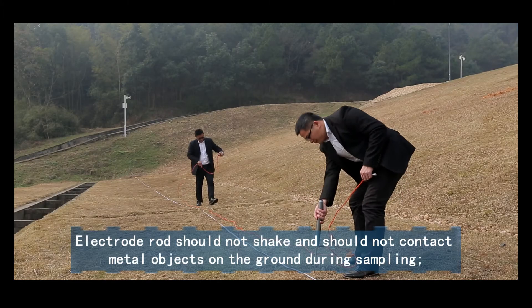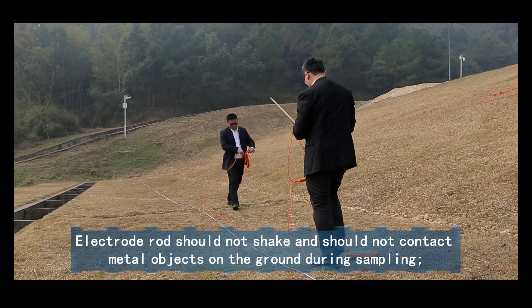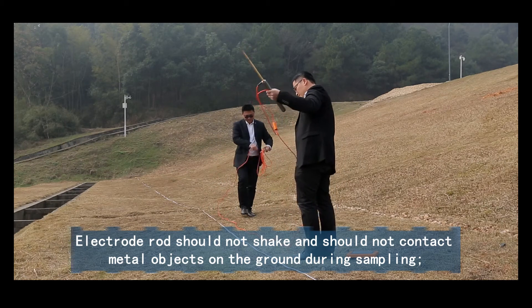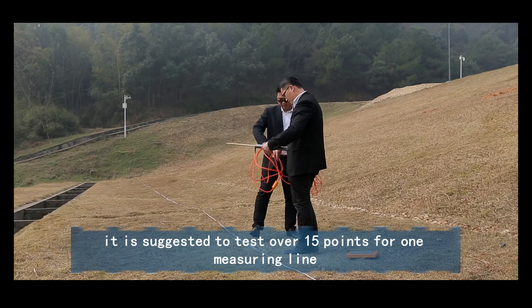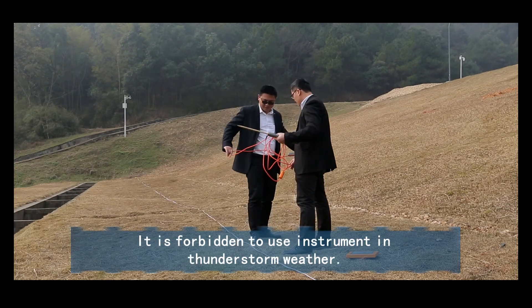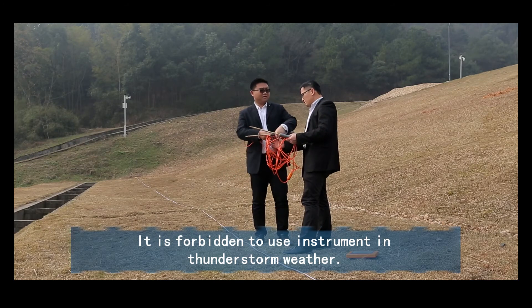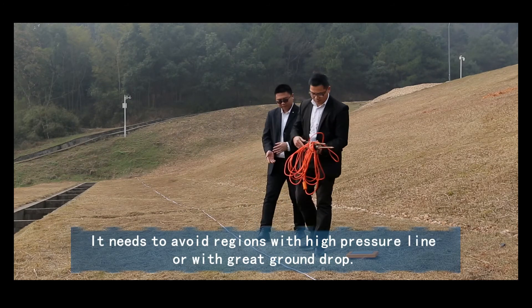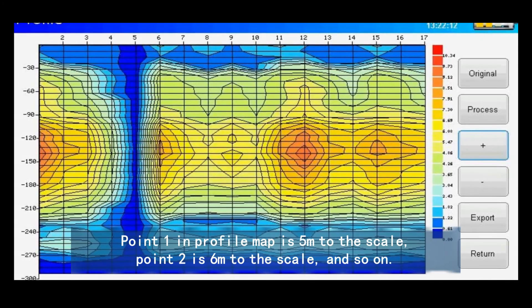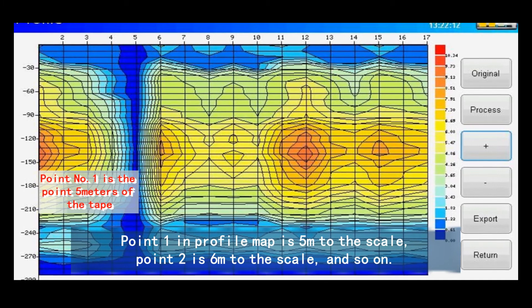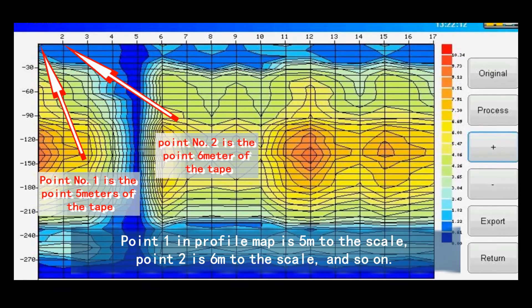Attention. Electrode rod should not shake and should not contact metal objects on the ground during sampling. It is suggested to test over 15 points for one measuring line. It is forbidden to use instrument in thunderstorm weather. It needs to avoid regions with high pressure line or with great ground rod. Point one in profile map is 5 meter to the scale. Point two is 6 meters to the scale and so on.